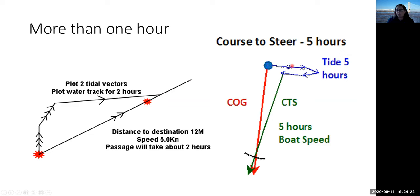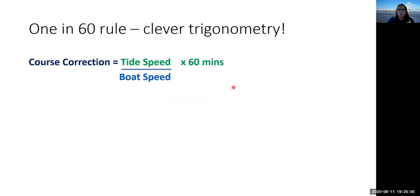For longer passages — like crossing the Irish Sea, which takes about four or five hours with a strong tidal stream — you add all the tidal vectors together: one, two, three, four, five tides. Then where the water track intersects the ground track, you use five hours of boat speed. Same principle, just bigger. Remember your course to steer is approximate — it assumes the tide and wind do exactly what they're predicted to do for the entire hour, so you need to keep monitoring and plotting your position.